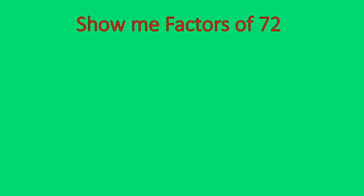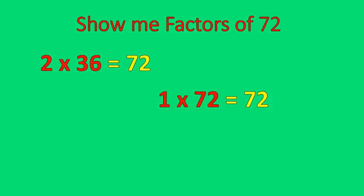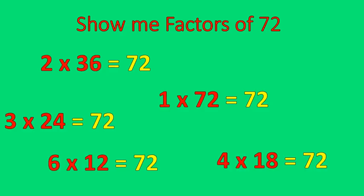So let's talk about some factors. Show me some factors of 72. Numbers that multiply together to give you 72: two times 36, one times 72, three times 24, four times 18, six times 12, eight times nine. These are all factors of 72. 72 has a lot of different factors — those are just some of them.